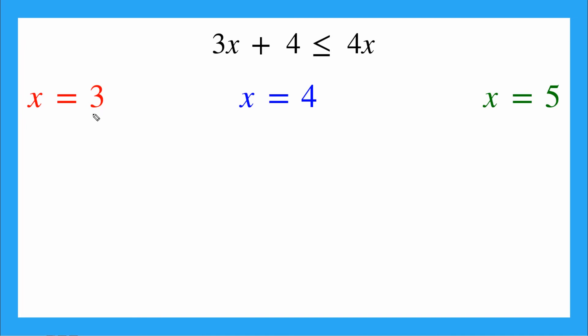First one, we have x equals 3. So same thing, I'm going to plug in my 3 here and my 3 here. So I'll have 3 times 3 plus 4 is less than or equal to 4 times 3. Now I can use order of operations. I'll have 9 plus 4 is less than or equal to 12. Now I can do my addition, 9 plus 4, 13 is less than or equal to 12. Is that true? No, right? 13 is bigger than 12. So this is not a possible solution.